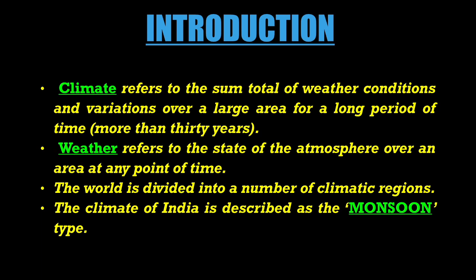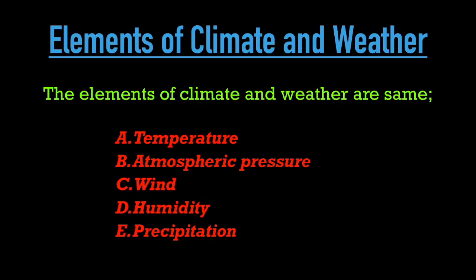The climate of India is mainly described as the monsoon type. The elements of both climate and weather are the same. There are 5 elements: Temperature, Atmospheric Pressure, Wind, Humidity, and Precipitation.